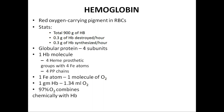0.3 grams is destroyed per hour and 0.3 grams of hemoglobin is synthesized per hour by the body. It is a globular protein. It consists of 4 heme subunits. Each heme molecule combines with successive oxygen molecules. One hemoglobin molecule contains 4 heme groups and each heme group contains 1 iron atom. So 4 heme groups contain 4 iron atoms, which combine with 4 polypeptide chains.